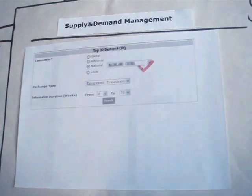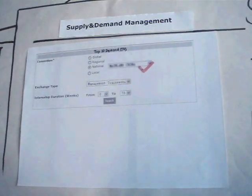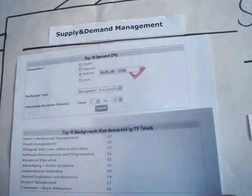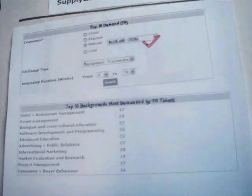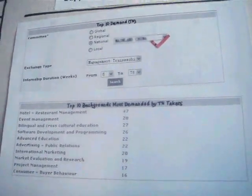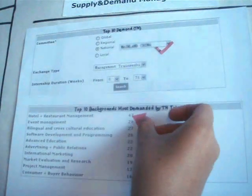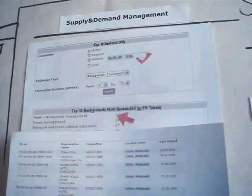To select one MC, you can see the top 10 backgrounds most demanded by its TN takers. And when you select the background or the number, you can see the TNs themselves.